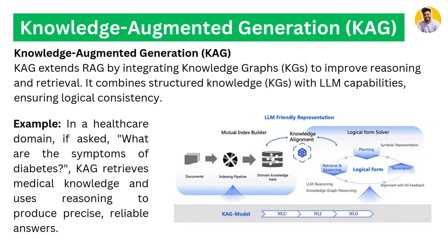That's where CAG comes in. CAG — Knowledge Argument Generation — improves the reasoning abilities of your vector database and can always give you logical answers. For example, in the healthcare domain, if you ask what are the symptoms of diabetes, CAG retrieves all the medical knowledge and uses reasoning to produce a precise and reliable answer.